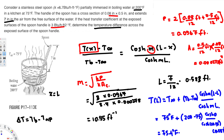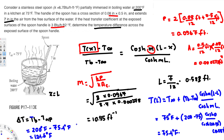Now T_tip = 75.4°F. To find ΔT, the temperature difference: ΔT = T_B − T_tip = 200°F − 75.4°F = 124.6°F. That is the final answer. I hope this helps, thanks for watching.